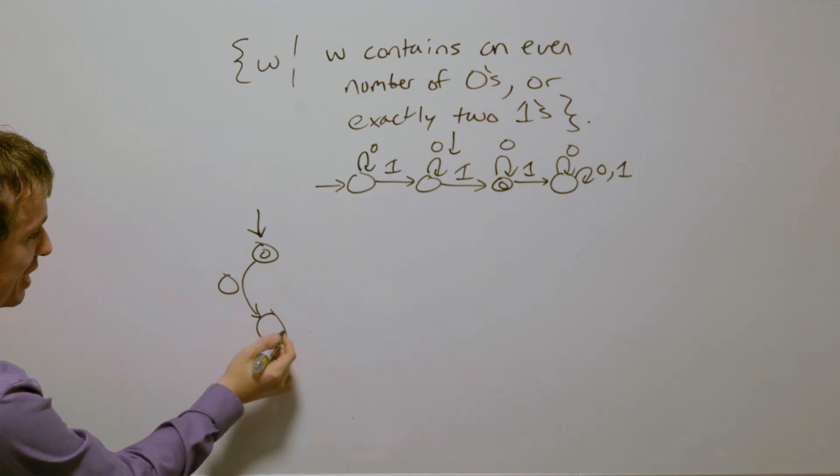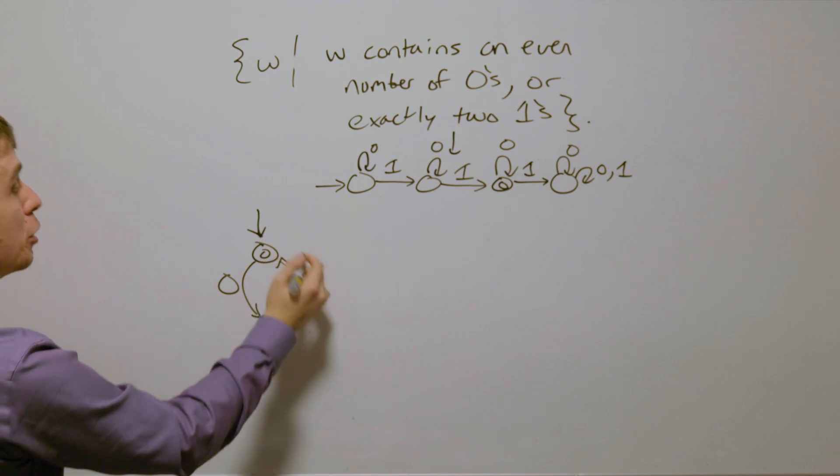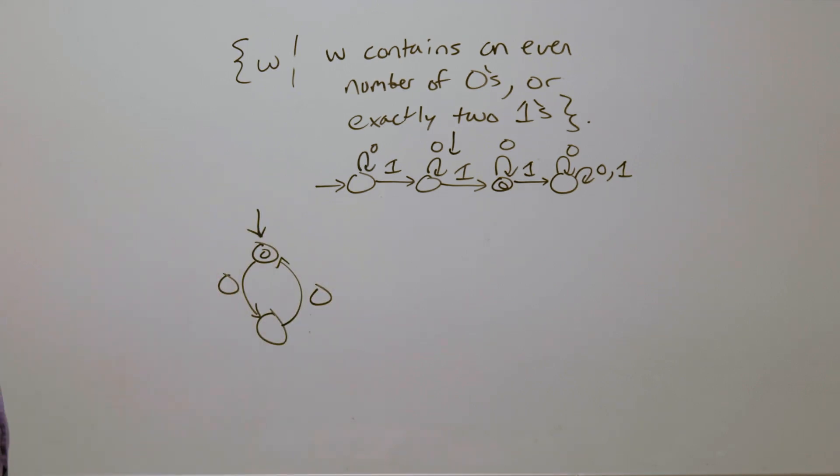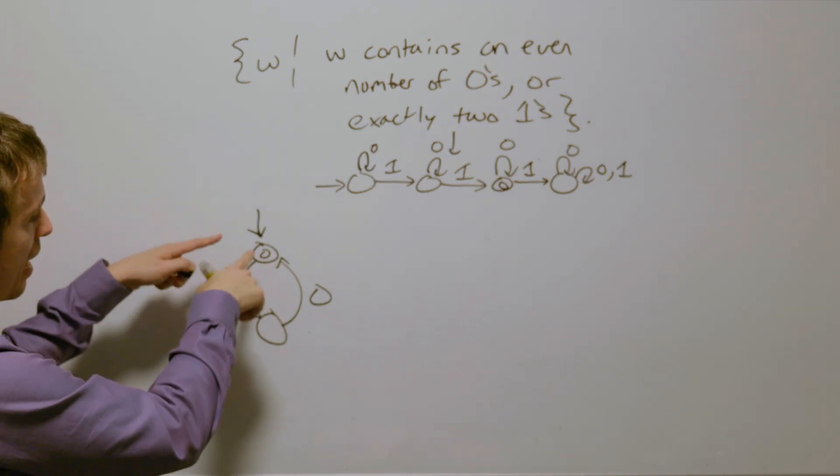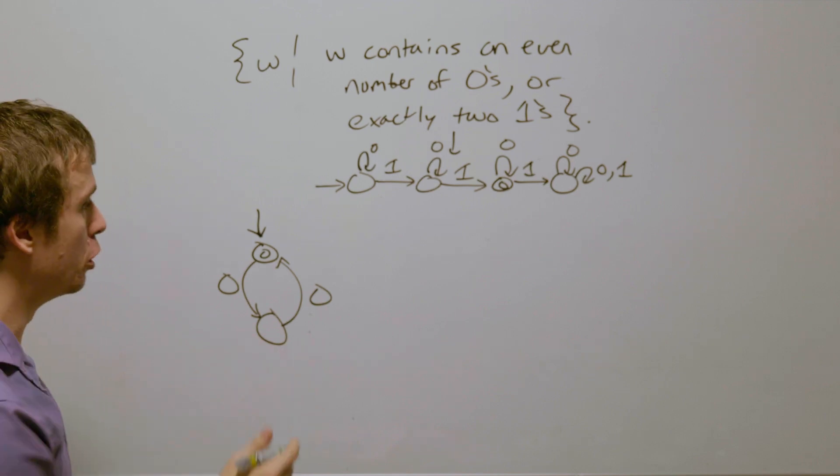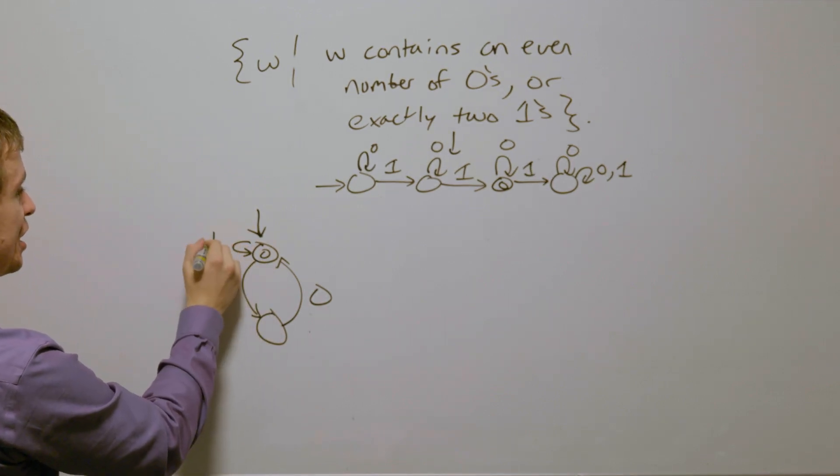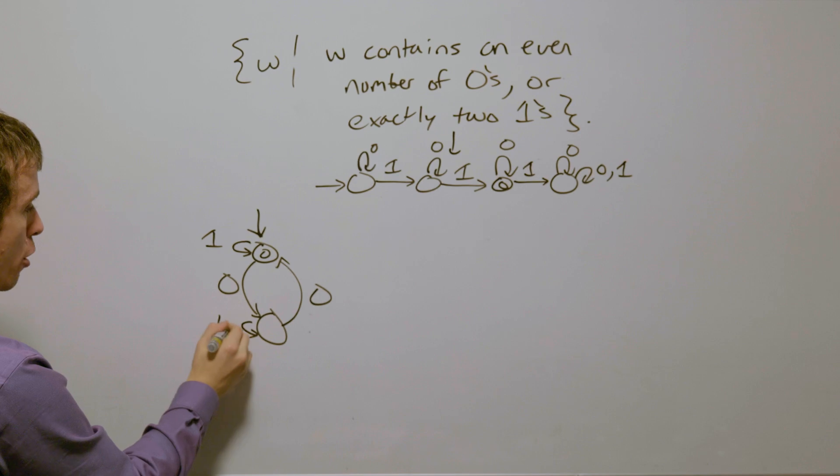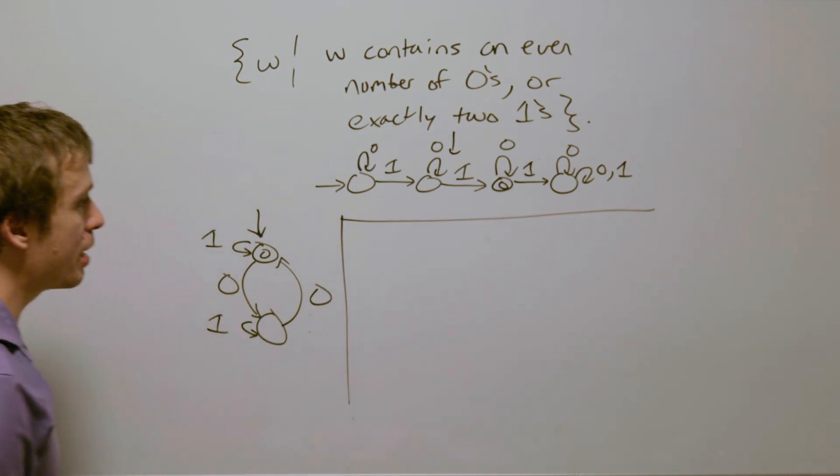that's going to change parity, so I'm going to go to an odd state, and then if we read another zero, I'm going to go back to even again, and if we read a one in either case, it doesn't change the number of zeros, and so therefore, they're going to stay in whatever parity they were before.